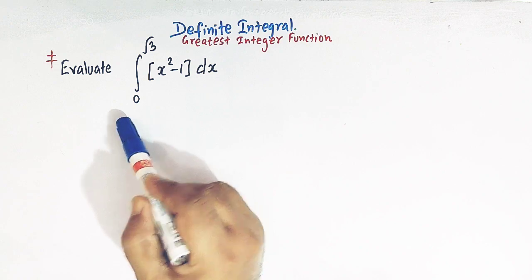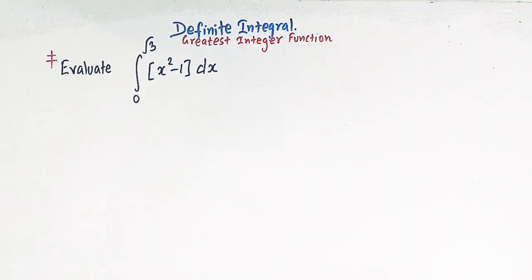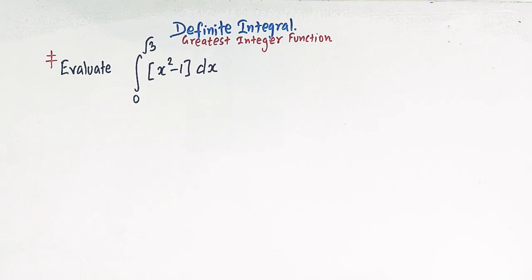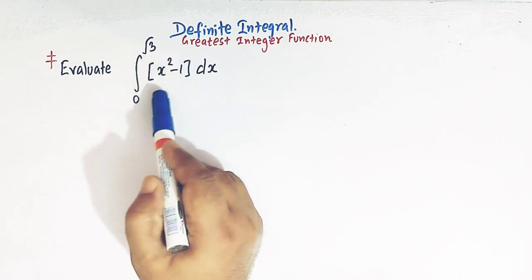The limits of integration vary from 0 to square root of 3. This problem can be solved by two methods: the first is by method of substitution, and the second is by method of inequalities, or we can say by directly using the definition of the greatest integer function. Here I will prefer the method of inequalities, and we'll also make use of the definition of the greatest integer function to redefine this integrand.